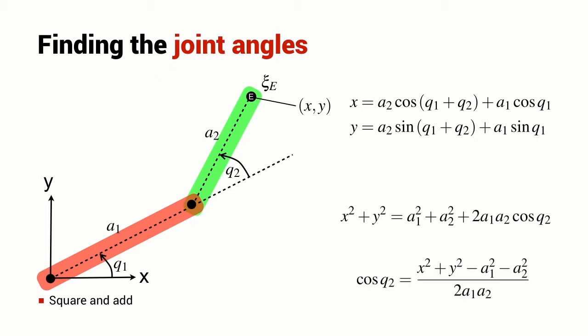Now I can solve for the joint angle Q2 in terms of the end effector pose, X and Y, and the robot's constants, A1 and A2.